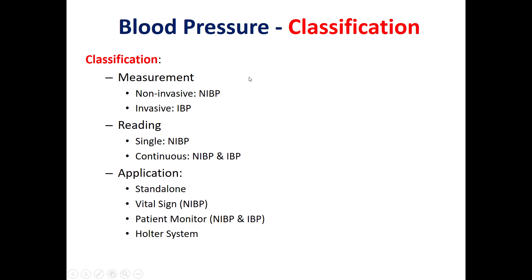Blood pressure instrumentation classification. Blood pressure instrumentation can be classified in different ways. The first way, which will be adopted in this lecture, is based on the measurement: invasive or non-invasive. It can also be classified based on whether it provides a single reading or a continuous reading. In its application, it can be a standalone blood pressure device or part of a device measuring many other parameters.